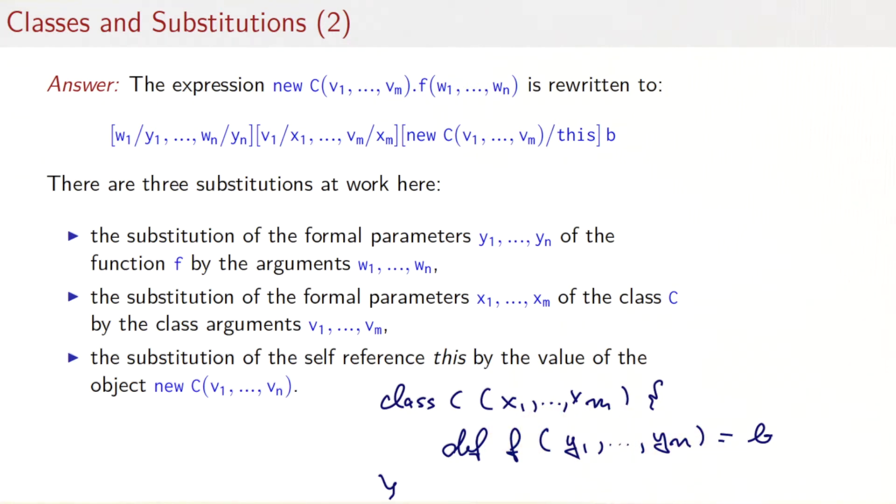The third substitution is important because the body of the function f here could contain a reference to this, the current class itself. And of course, that reference to this outside of the class wouldn't have any meaning, so we have to replace it with something else. The idea is simply the receiver of this call, the value new C v1 to vm itself—the object that takes the method call and replaces this. So you see, there are three substitutions at play. It's quite a bit more complicated than in the purely functional model, but it's still the same model.